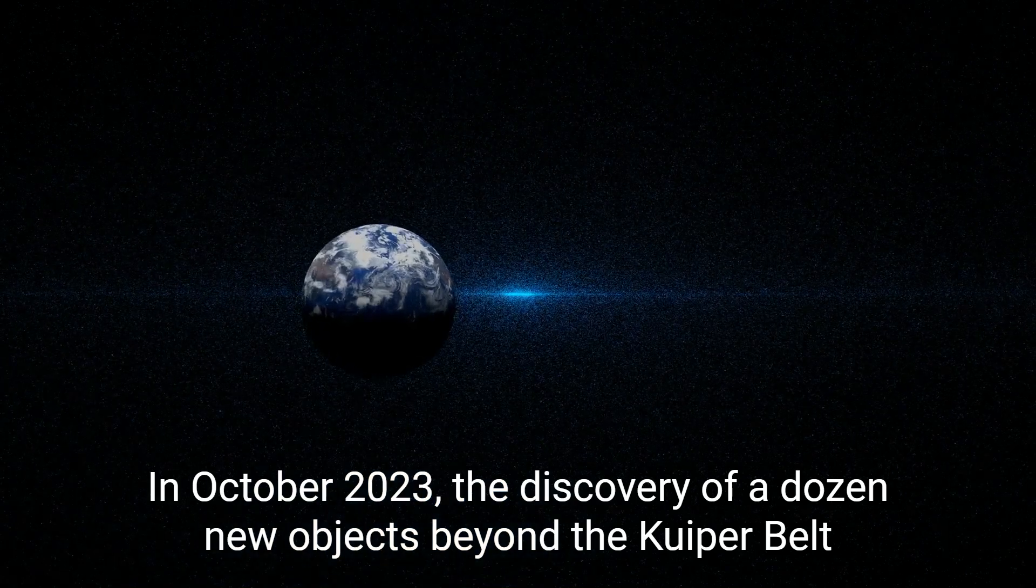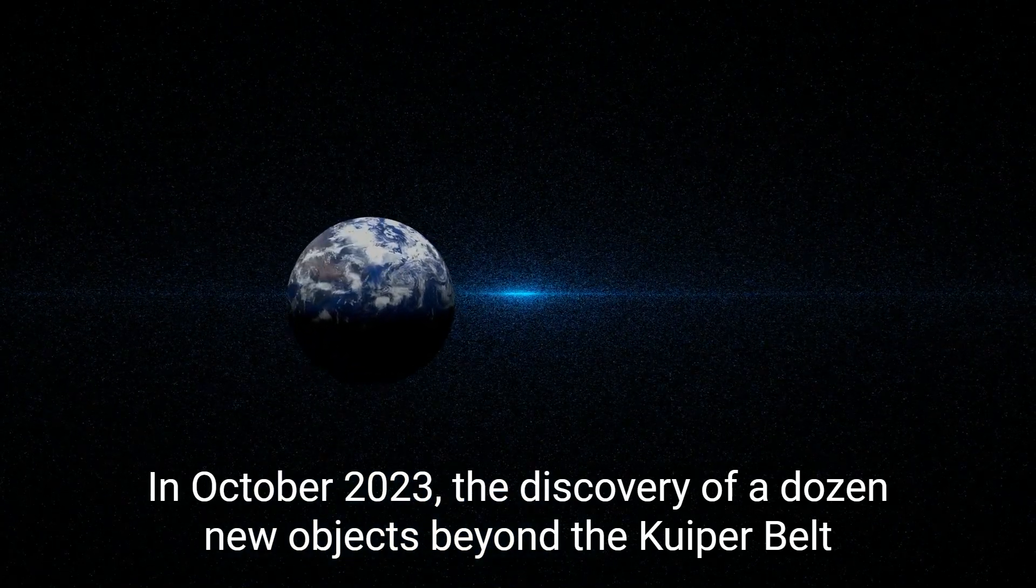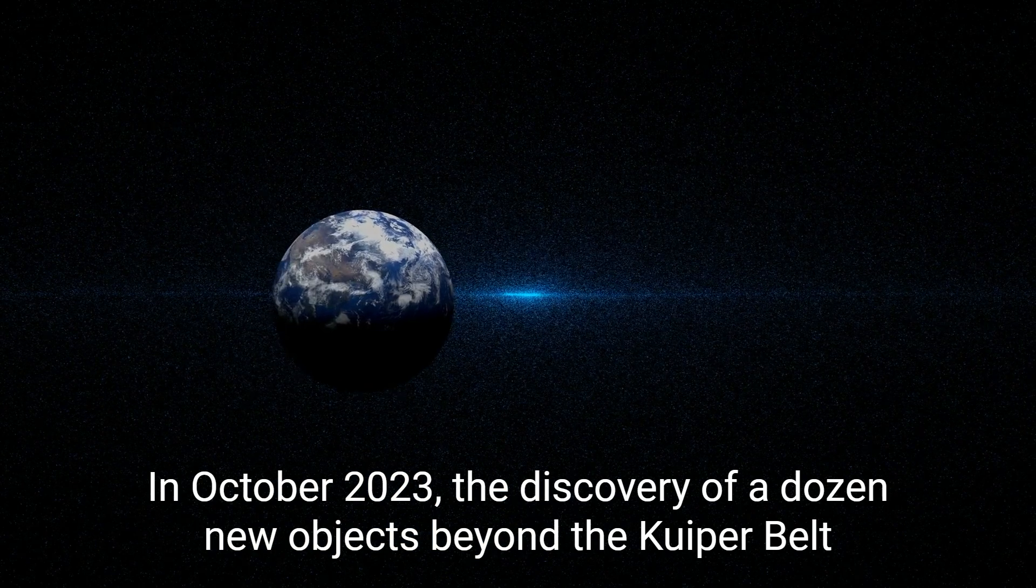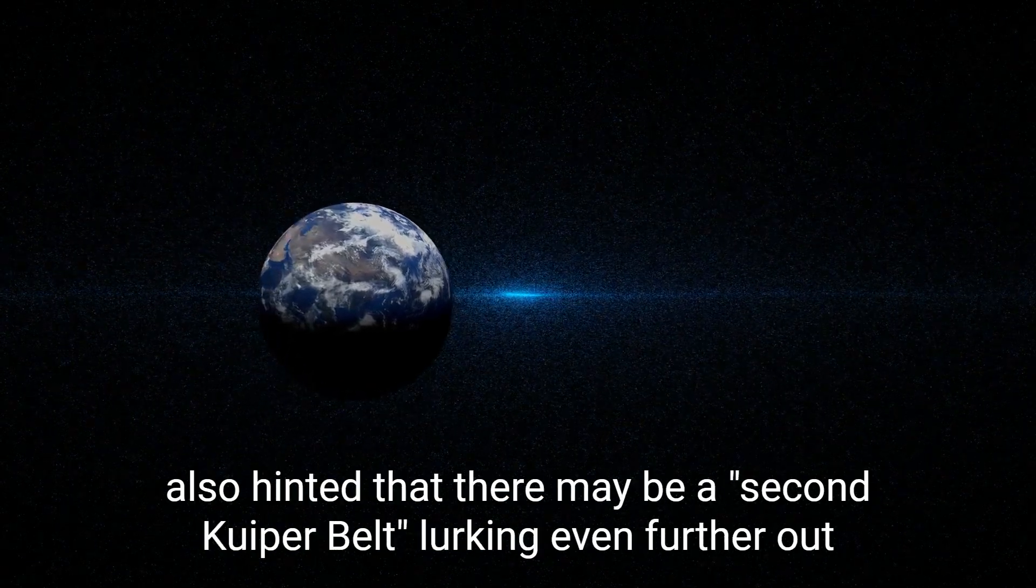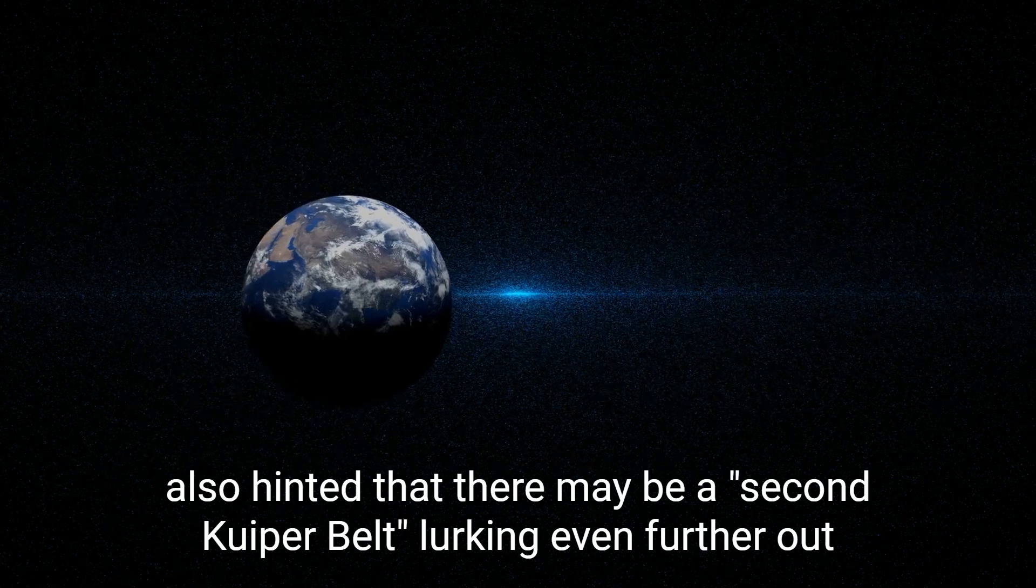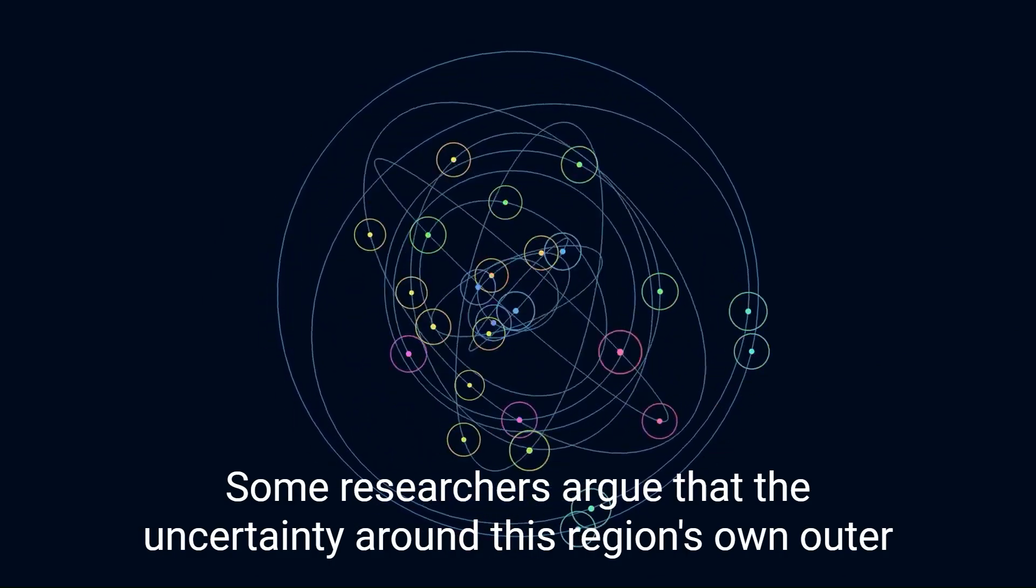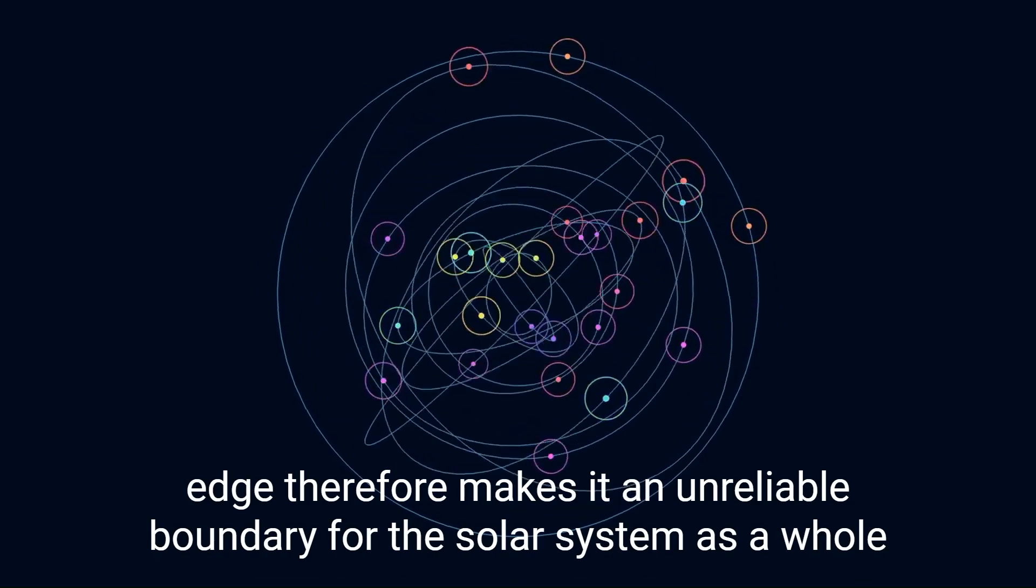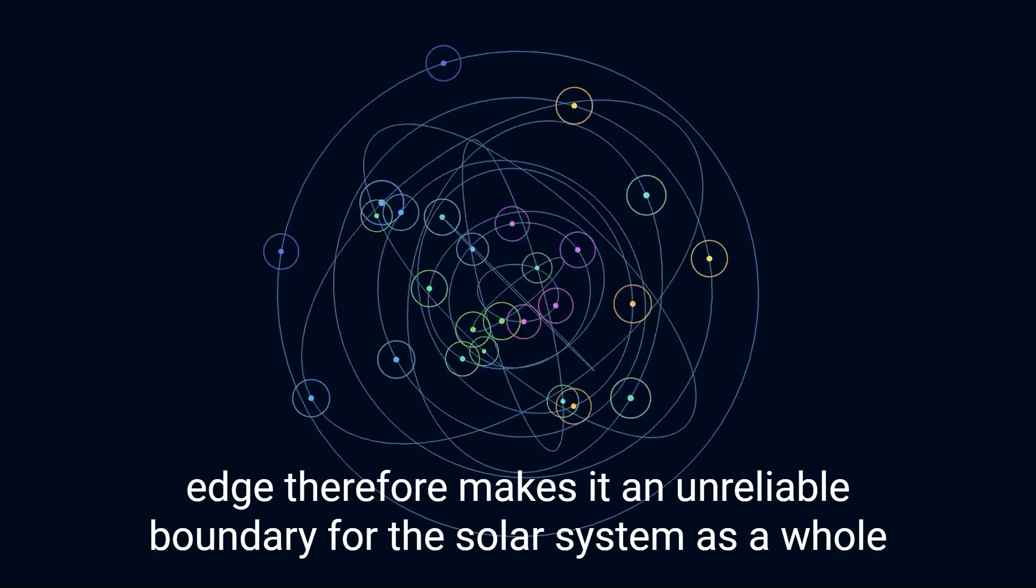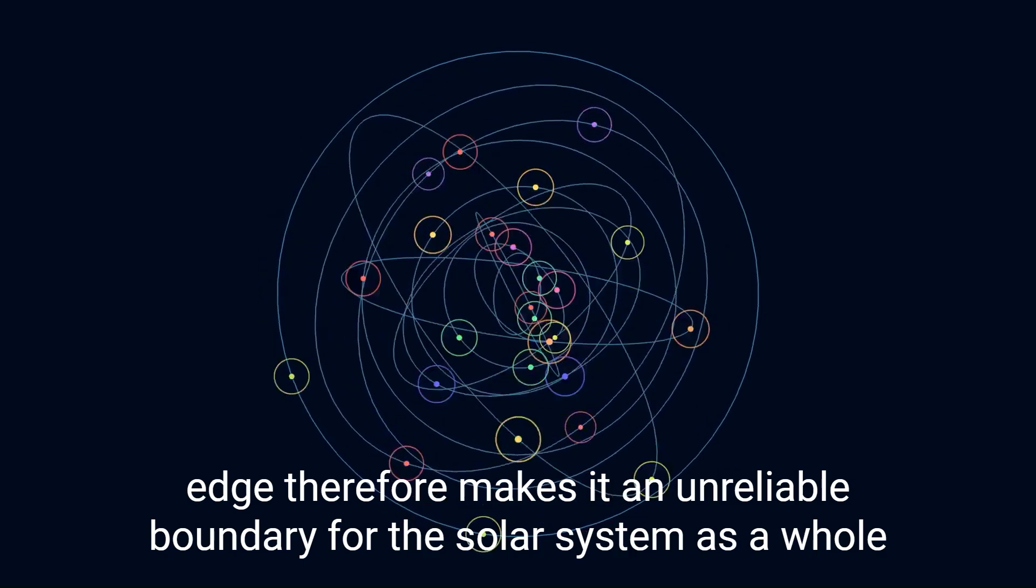In October 2023, the discovery of a dozen new objects beyond the Kuiper belt also hinted that there may be a second Kuiper belt lurking even further out. Some researchers argue that the uncertainty around this region's own outer edge therefore makes it an unreliable boundary for the solar system as a whole.